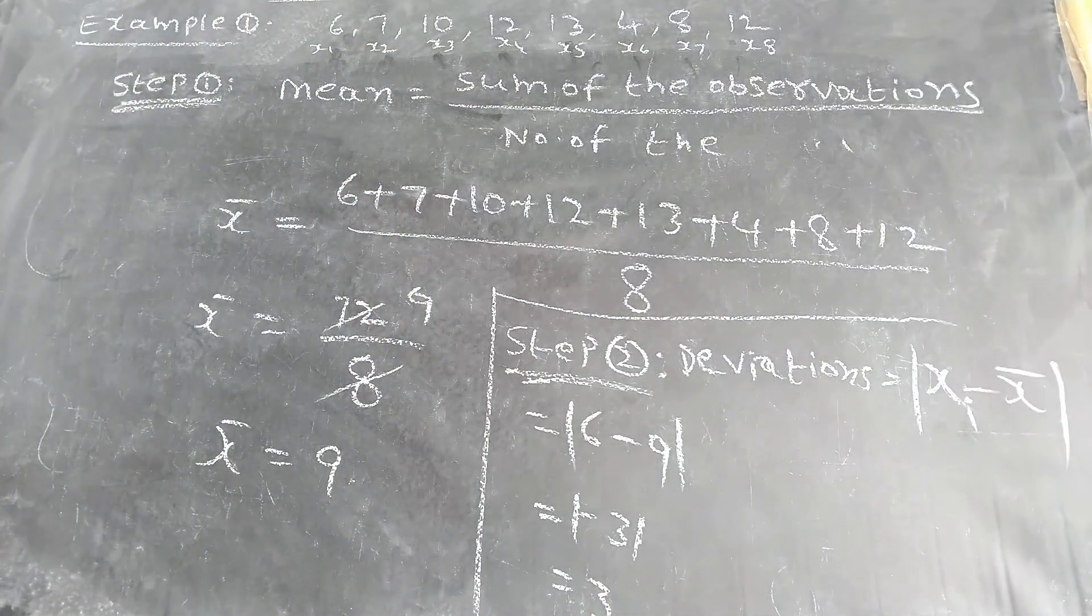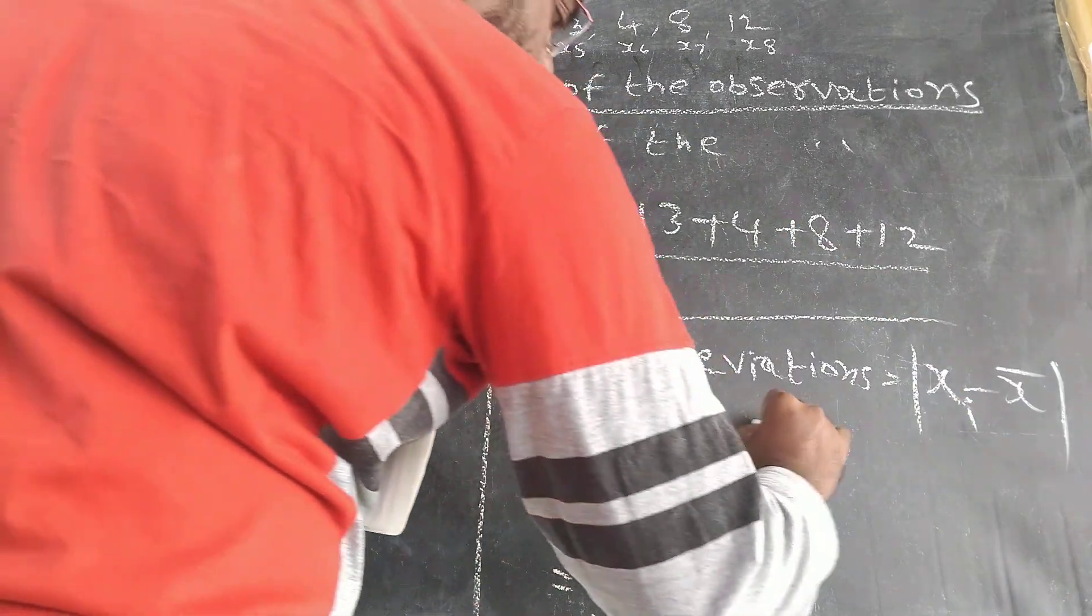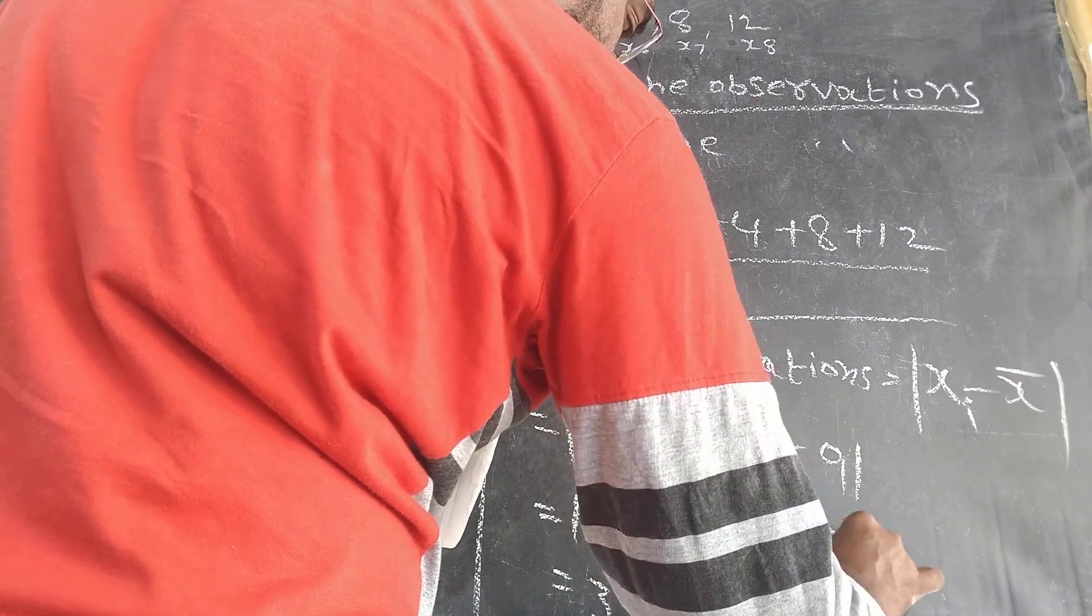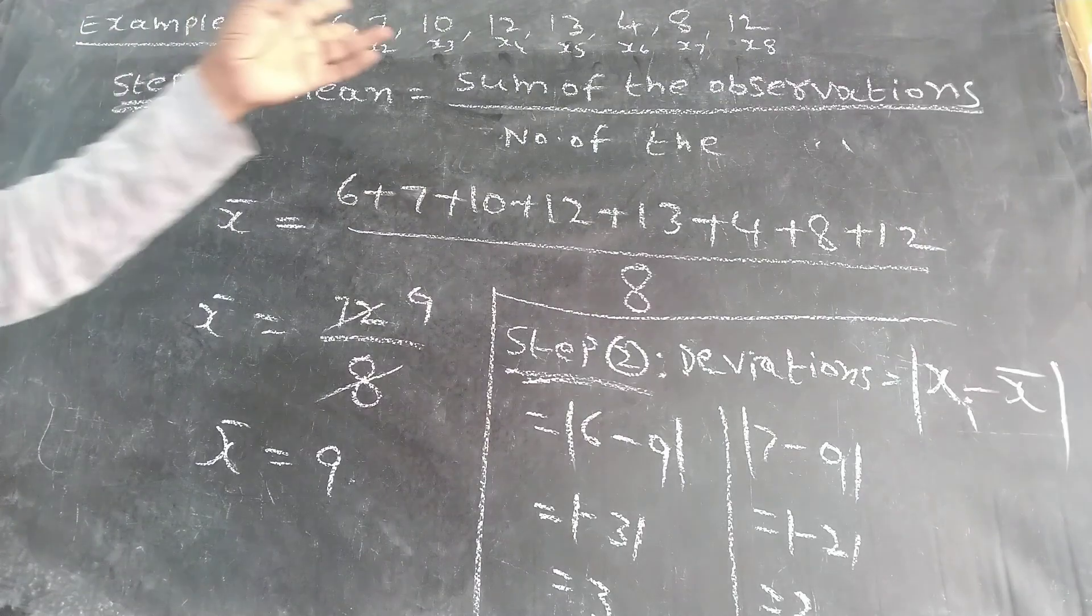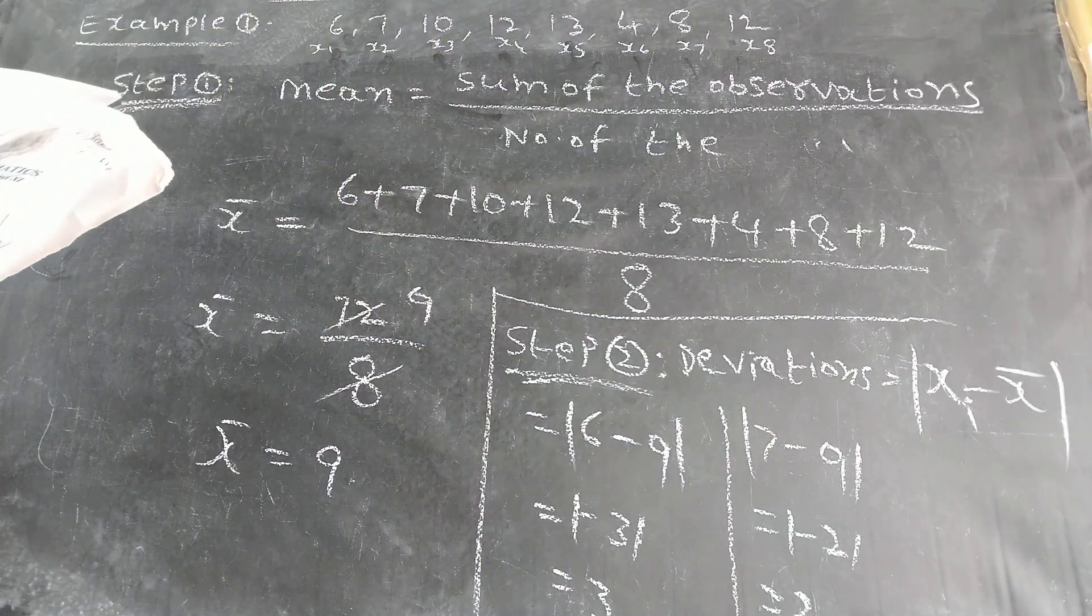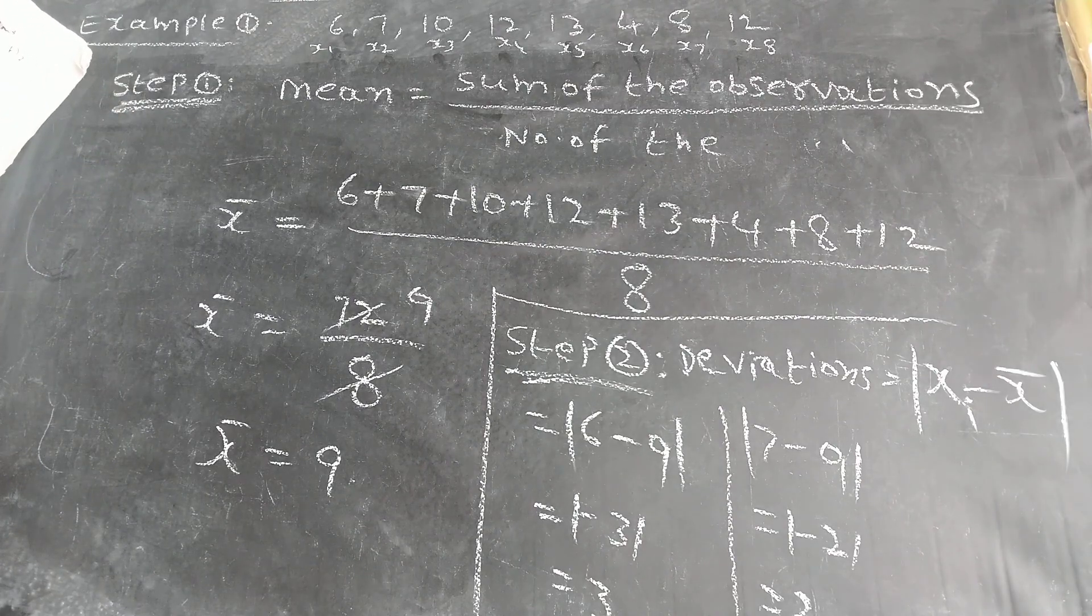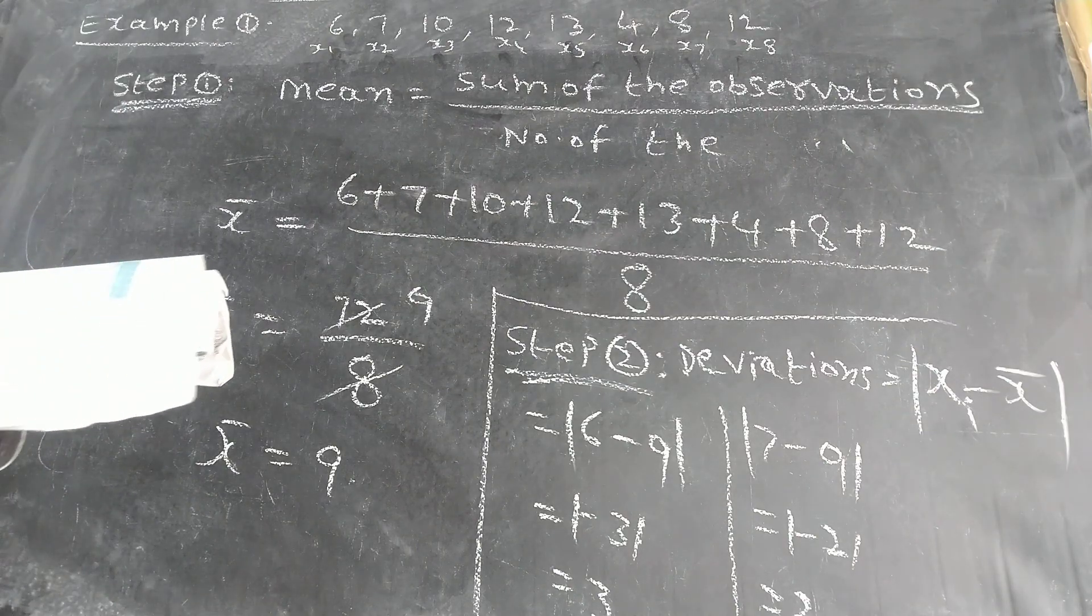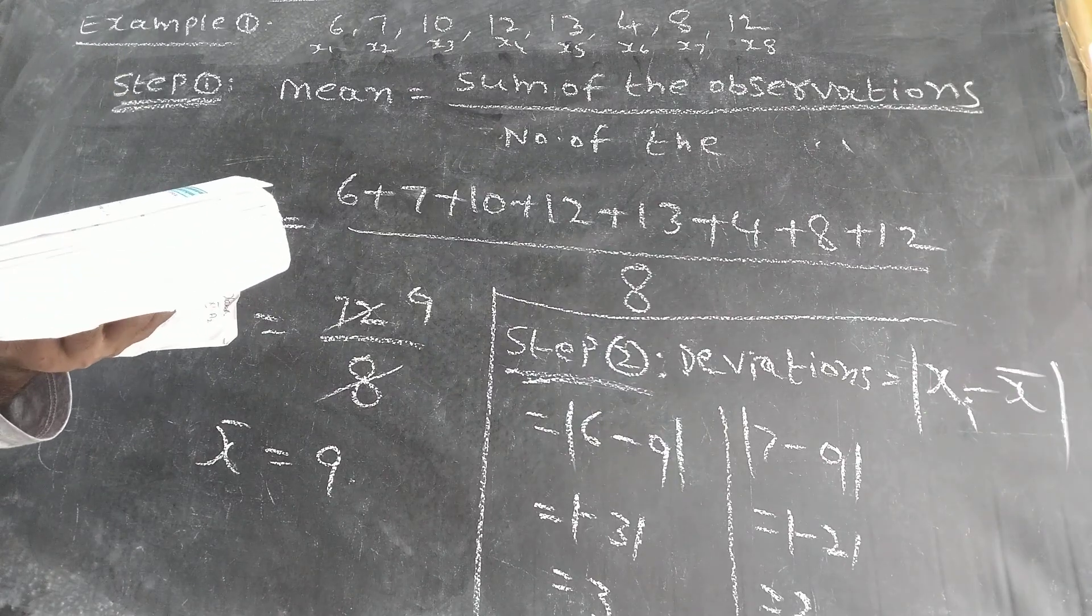Same like that, you have to find X2. What is the X2 value? 7. 7 minus 9 equals minus 2. Minus 2 means always plus 2. Same like that, remaining also you have to find out. What will come? 3, 2, 1, 3, 4, 5, 1, 3.